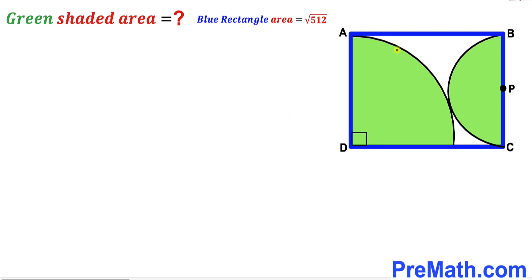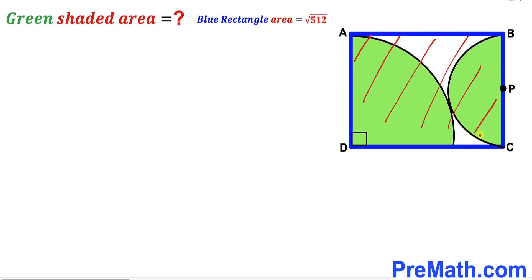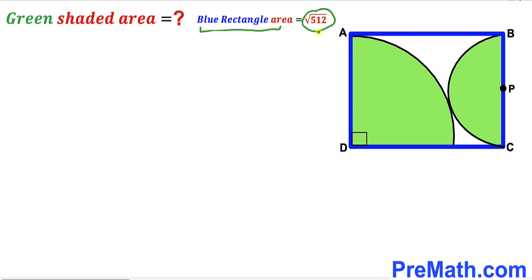Welcome to PreMath. In this video we have a green shaded quarter circle with center D and a green shaded semi-circle with center P, fully inscribed in a blue rectangle A, B, C, D, as shown in the diagram. The area of this blue rectangle has been given as square root of 512 square units, and our task is to calculate the area of the combined green shaded region.